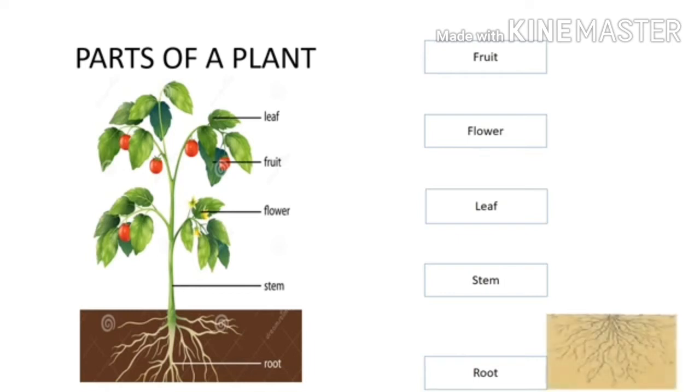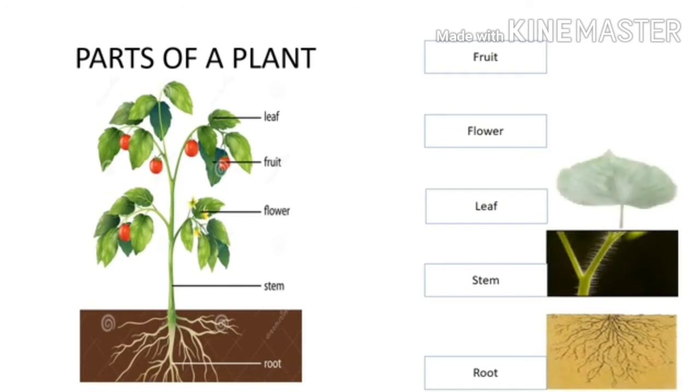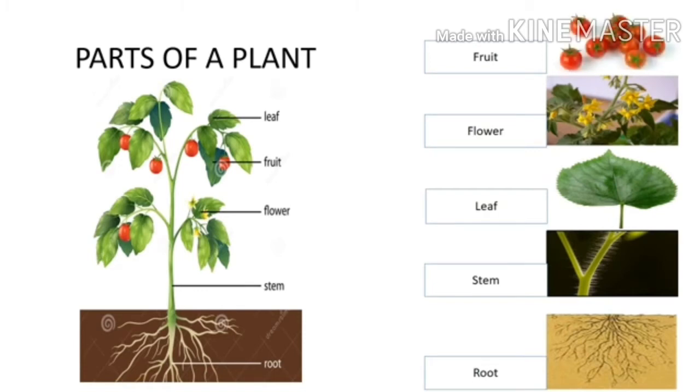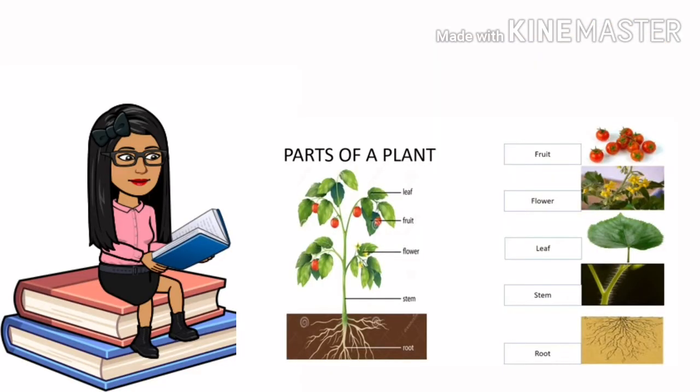They are root, stem, leaf, flower, and fruit. Now let us study what each part of the plant does.